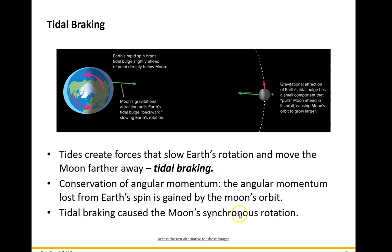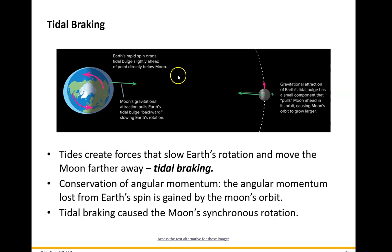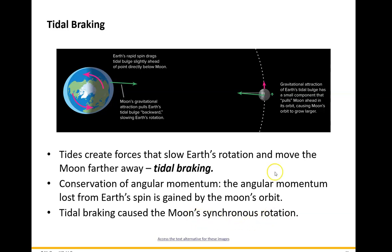We got the five-hour figure using a quantity in physics called angular momentum. If you add up the angular momentum of the moon and the Earth and do a computer simulation of when the object called Theia hit the Earth, you can figure out how fast the Earth was moving. Tidal braking is also the reason for the synchronous rotation of the moon.